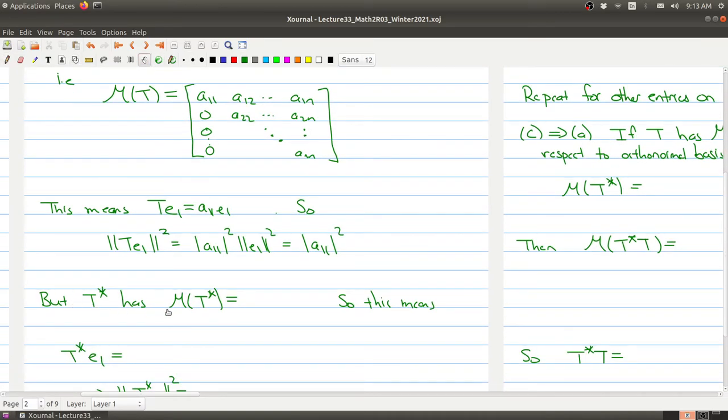Now, the adjoint of T has the matrix associated to it which is the conjugate transpose of this matrix. So when we take the conjugate transpose, the A11, A12, and so on, become the first column. So that means that the adjoint will take E1 to A11 E1 plus A12 E2 up to A1n En.